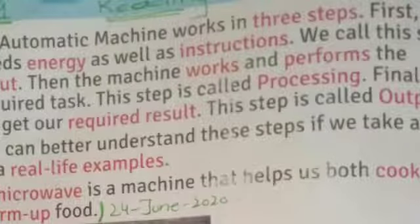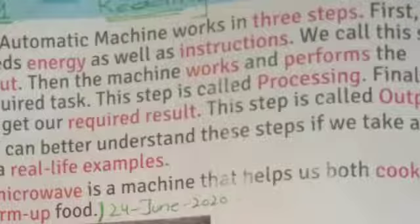An automatic machine works in three steps. First, it needs energy as well as instructions — we call this step input. Then the machine works and performs the required task — this step is called processing. Finally, we get our required results — this step is called output.